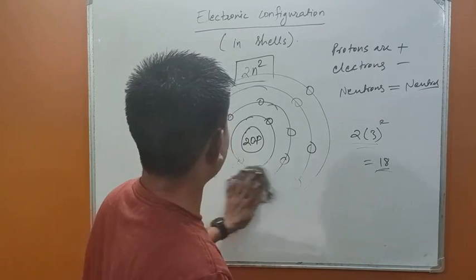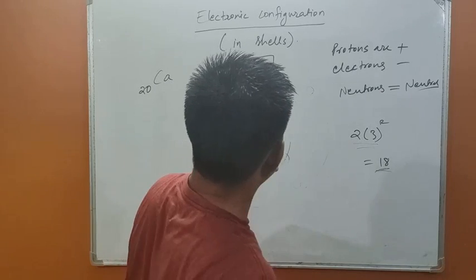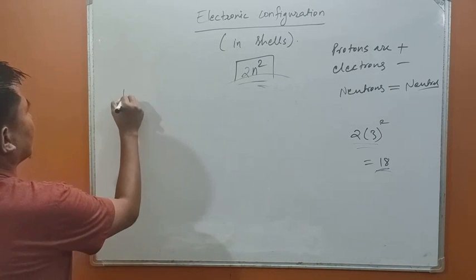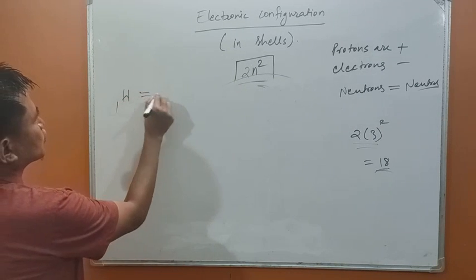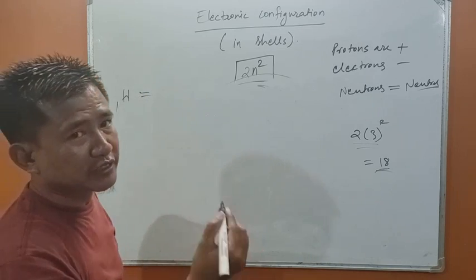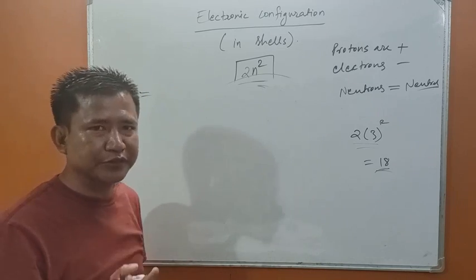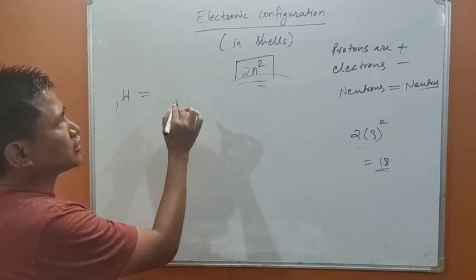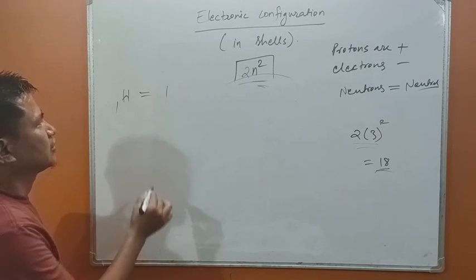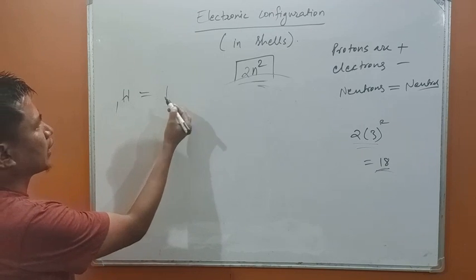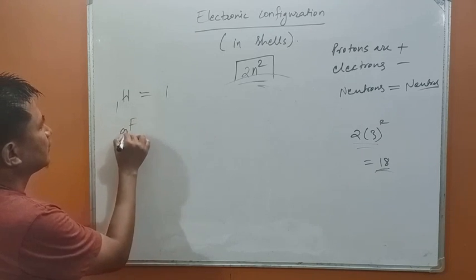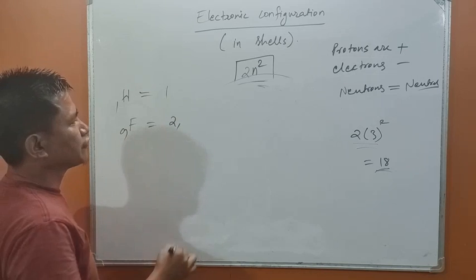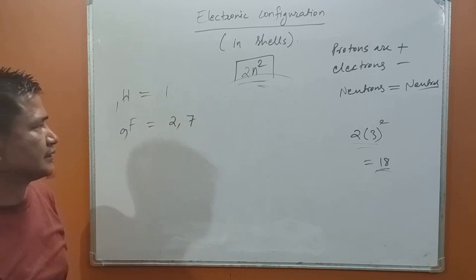We do not always draw the full atomic structure. When writing the distribution of electrons in shells, we use a shorthand notation. For hydrogen, atomic number 1, the electronic configuration is simply 1. For fluorine, atomic number 9, the configuration is 2 electrons in the first shell and 7 electrons in the second shell: 2, 7.